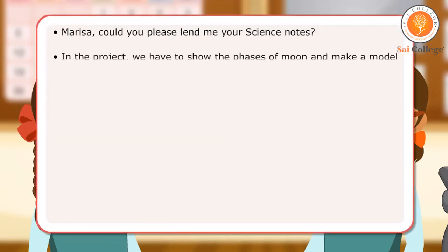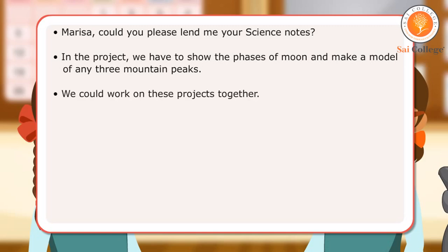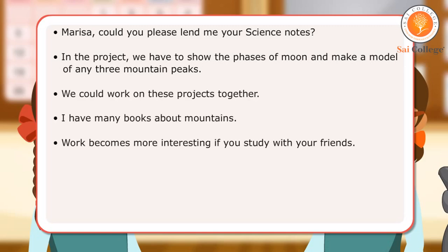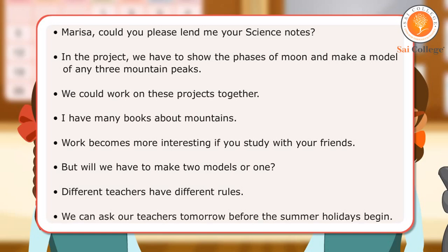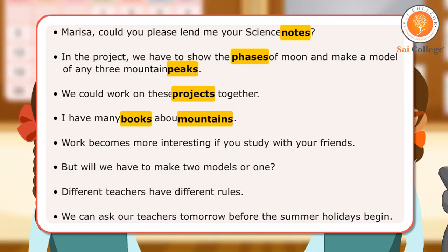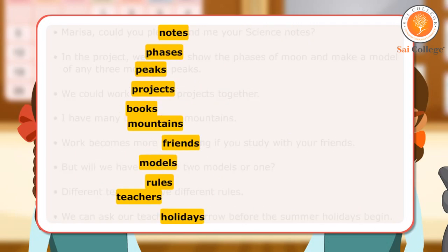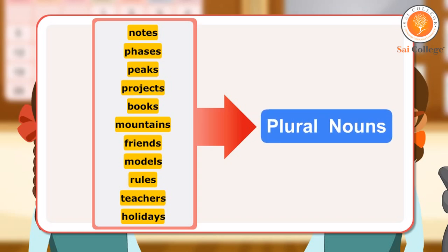The girls speak about more than one thing, place or person several times in their conversation. The words notes, phases, peaks, projects, books, mountains, friends, models, teachers, rules, and holidays are examples of plural nouns.